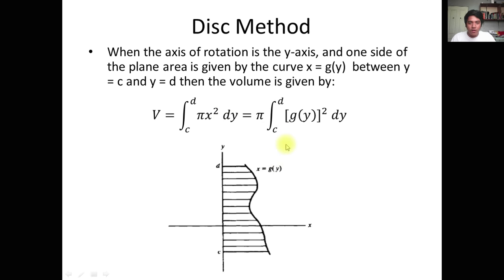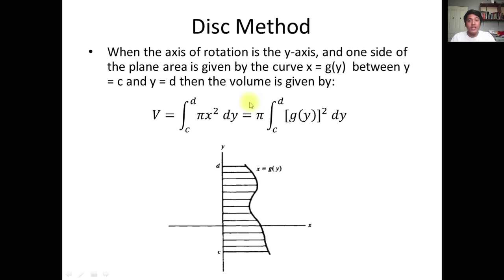So we have V = π ∫ [G(y)]² dy, where the function x is expressed in terms of y. We have to express the function in terms of y in order to integrate. C to D are the limits, which lie along the Y-axis. That is the disk method for rotation about the Y-axis.